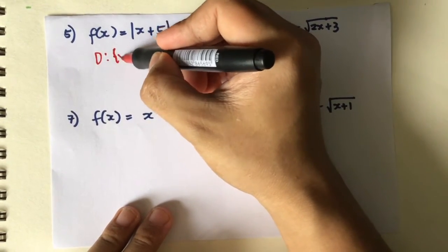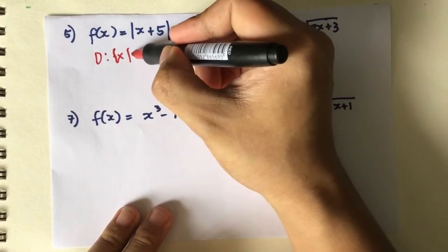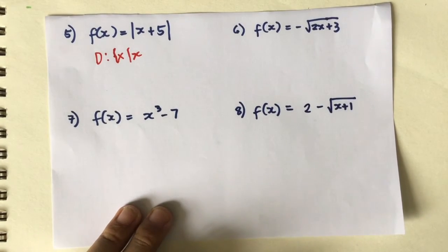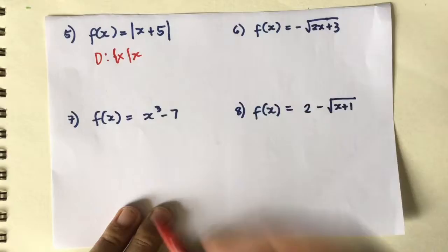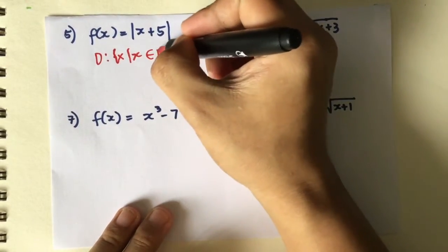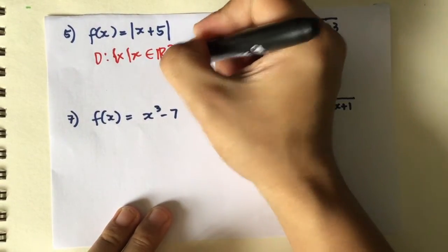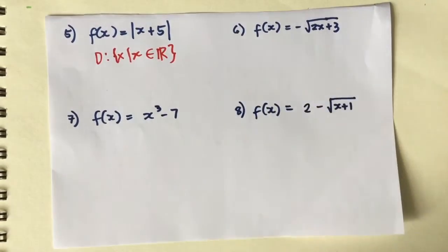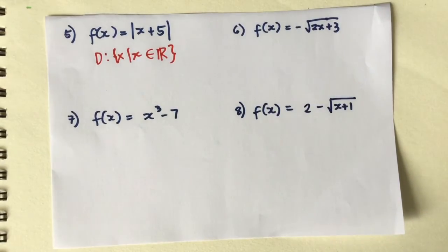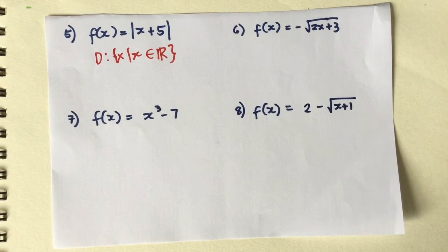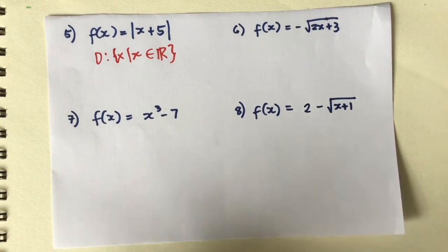What we're going to focus on now is the value of x. Are you allowed to use any values of x — positive, negative, or 0? If you can use any of these numbers, then your domain is the set of all real numbers, which means you can use any value of x and it will still give you a number.